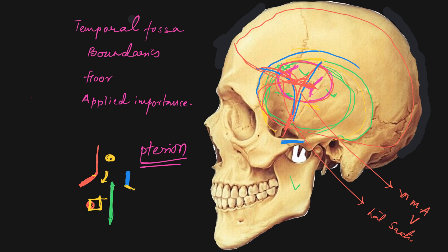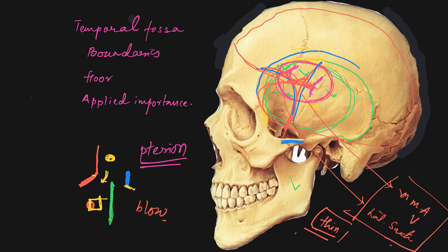The other importance of the pterion is that it is a very thin bone compared to other parts of the skull. Even a small blow can injure the middle meningeal artery over this area. Also, whenever we want to perform decompression of the brain, we can do it easily over this area.